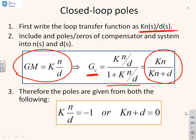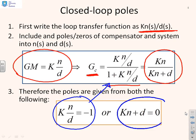So what does this tell us? Closed loop poles can be given from two expressions. Either I can write Kn over d equals minus 1, or I can do Kn plus d equals 0. Now the key thing is you must be flexible, because depending on the scenario it might be easier to use either of these expressions.